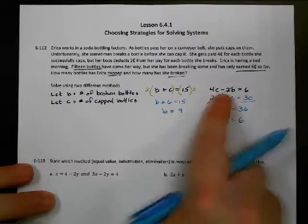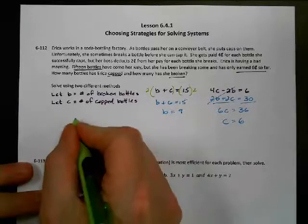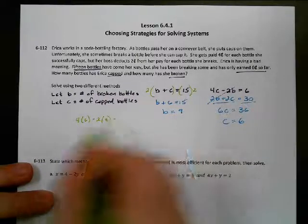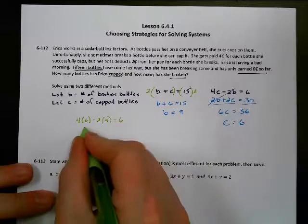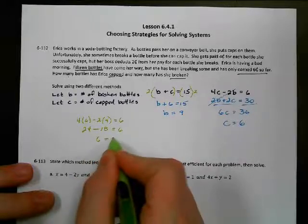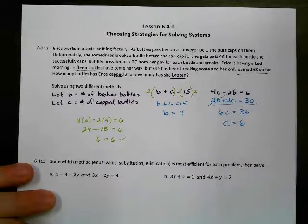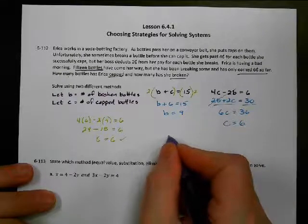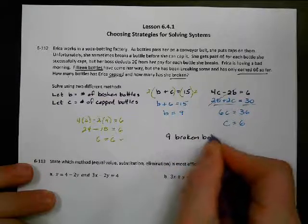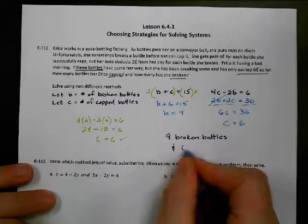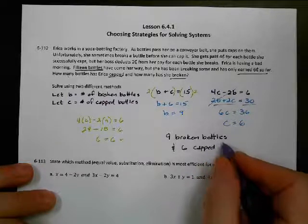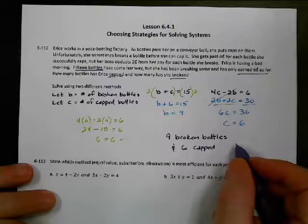We can double check this by plugging it into this equation over here. So 4 times 6 minus 2 times 9. Does that equal the six cents that she made? 24 minus 18. Yeah, that's 6. So I get 6 equals 6. Boom, done, finished. So I'm going to answer my question. So she has nine broken bottles and six capped bottles. Realize how sticky she would be at this point? She broke nine bottles. Just one bottle is going to make you super... Oh, that's kind of gross.